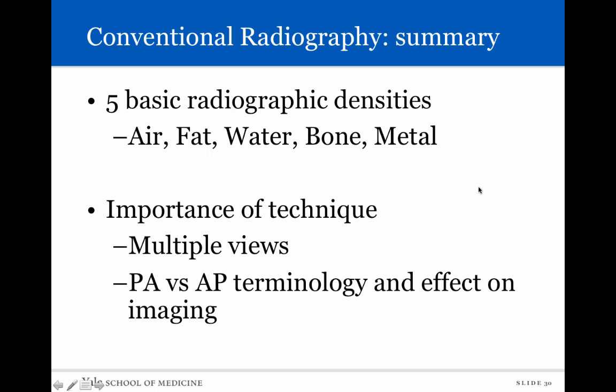In summary for conventional radiography: these are the five basic radiographic densities — air, fat, water and soft tissue, bone, and metal. It's also important to understand the different techniques. You need multiple views to see pathology, and understanding PA versus AP is also important as it has an effect on the way things look.